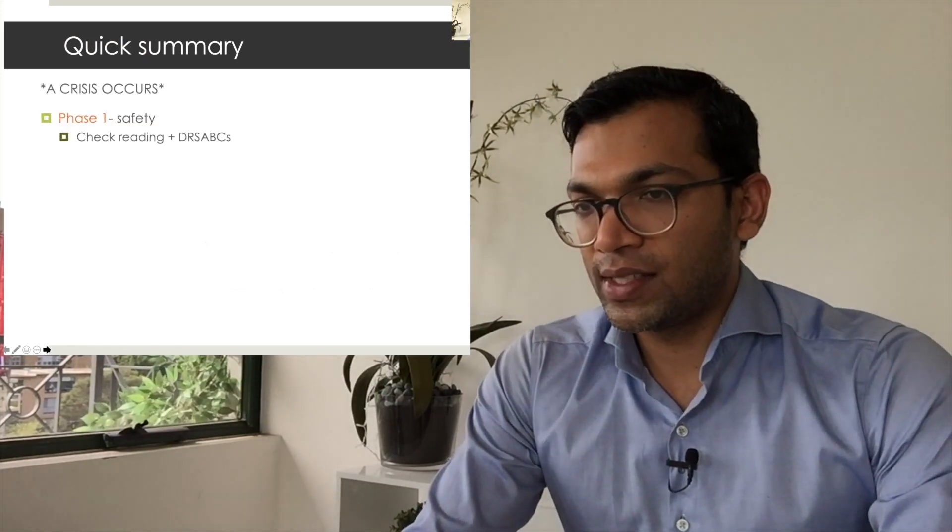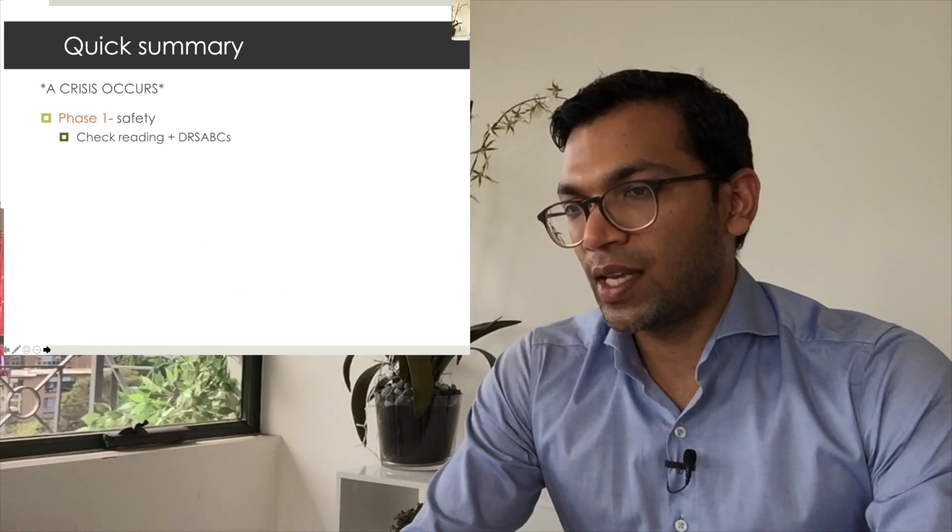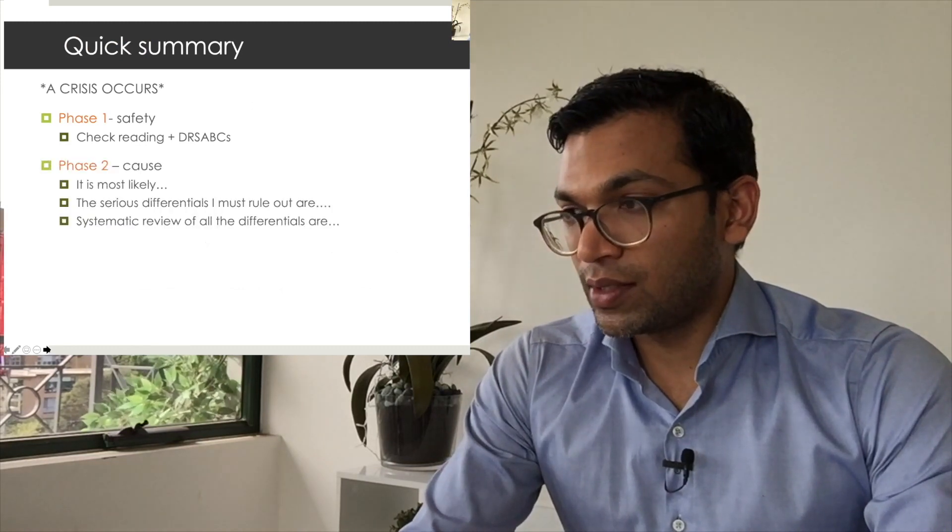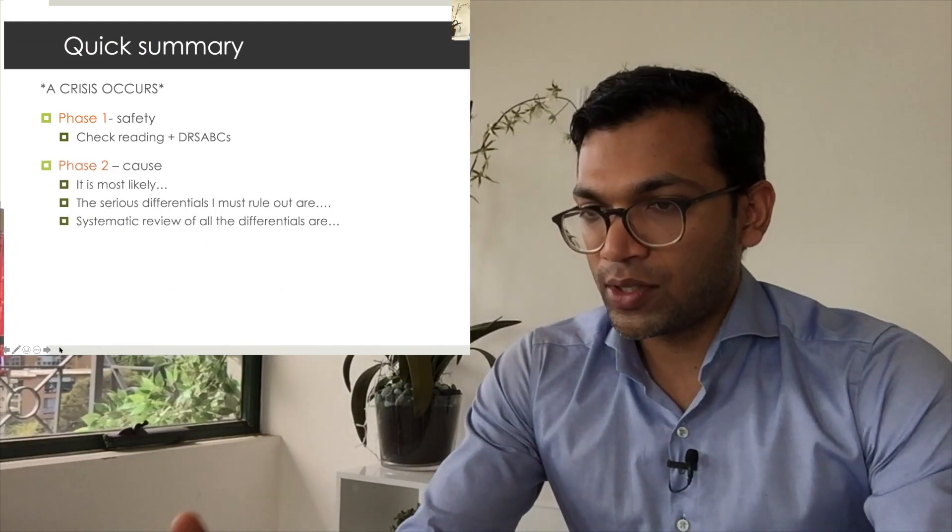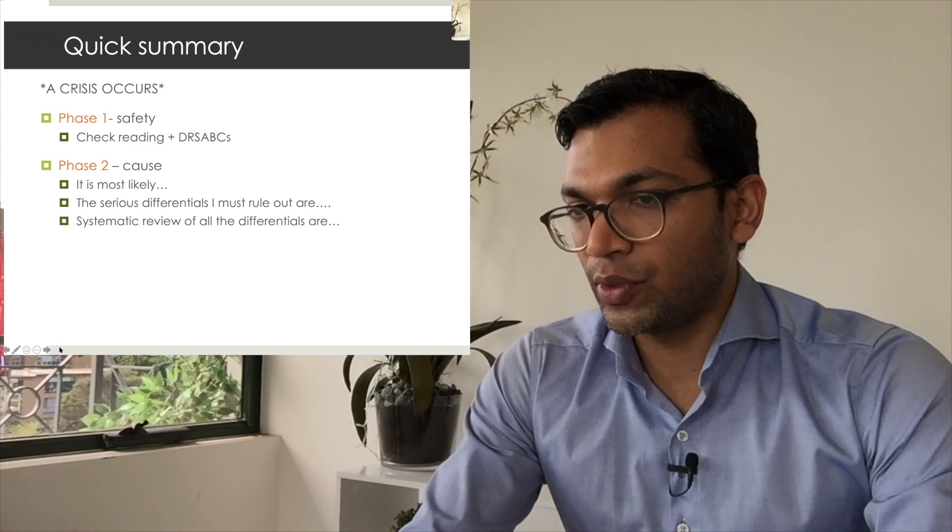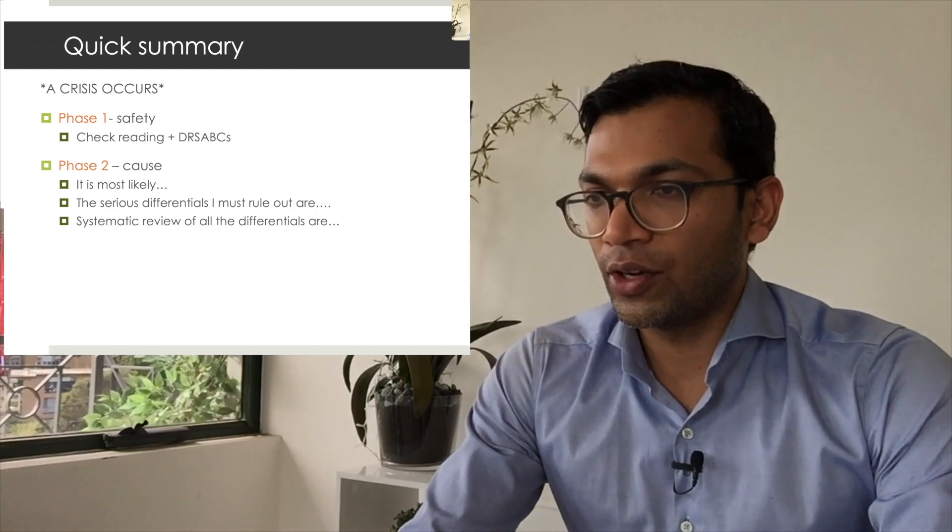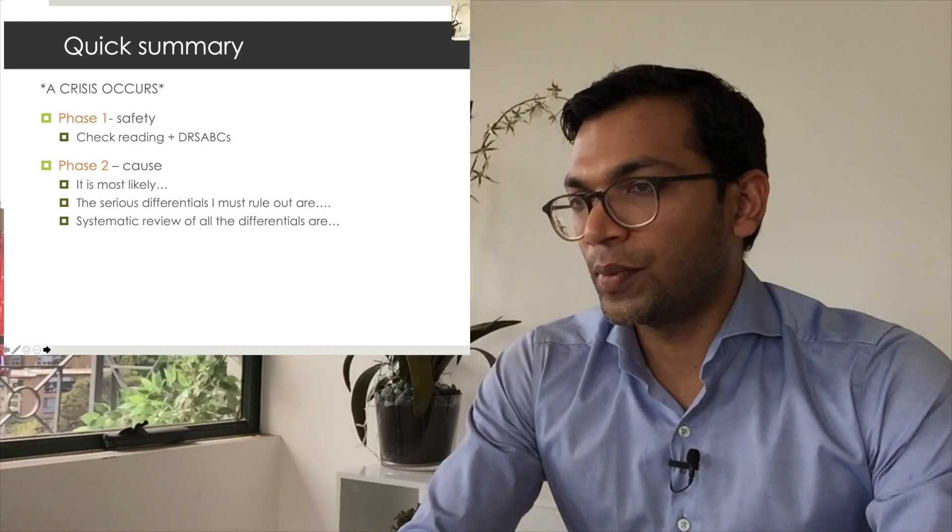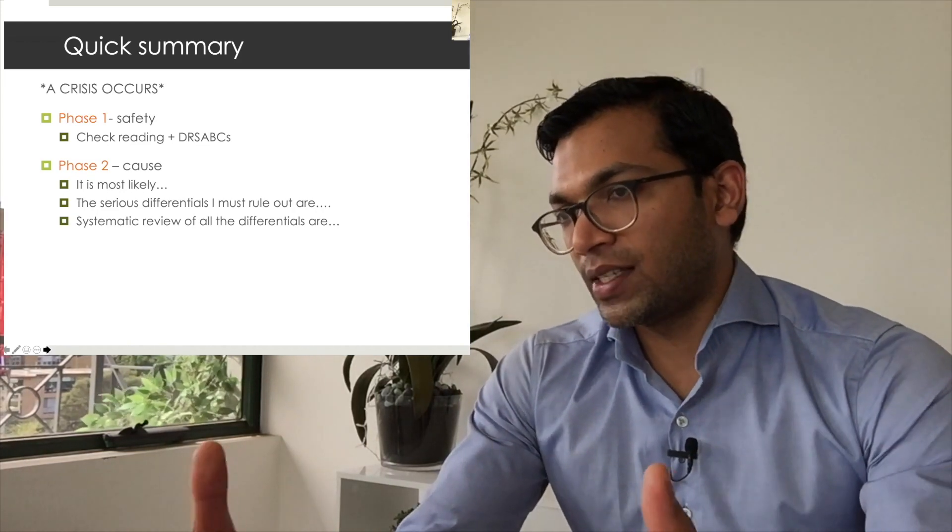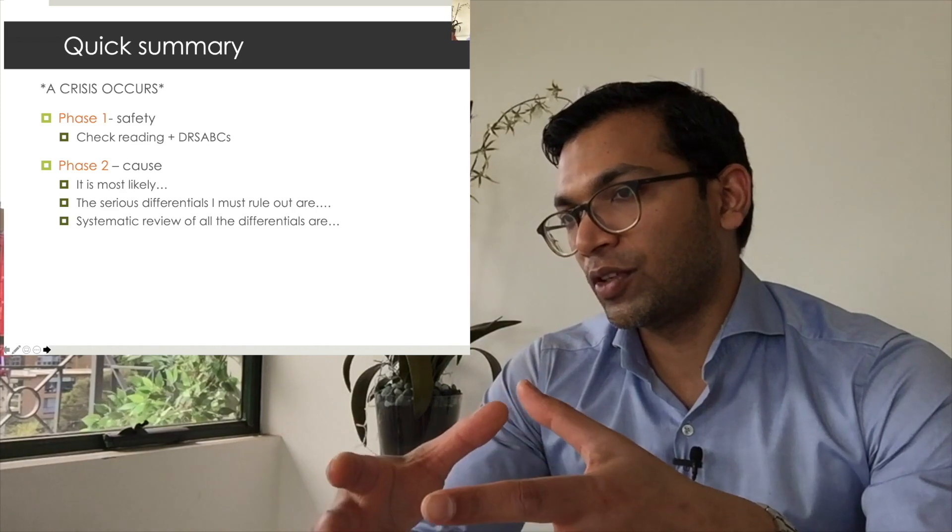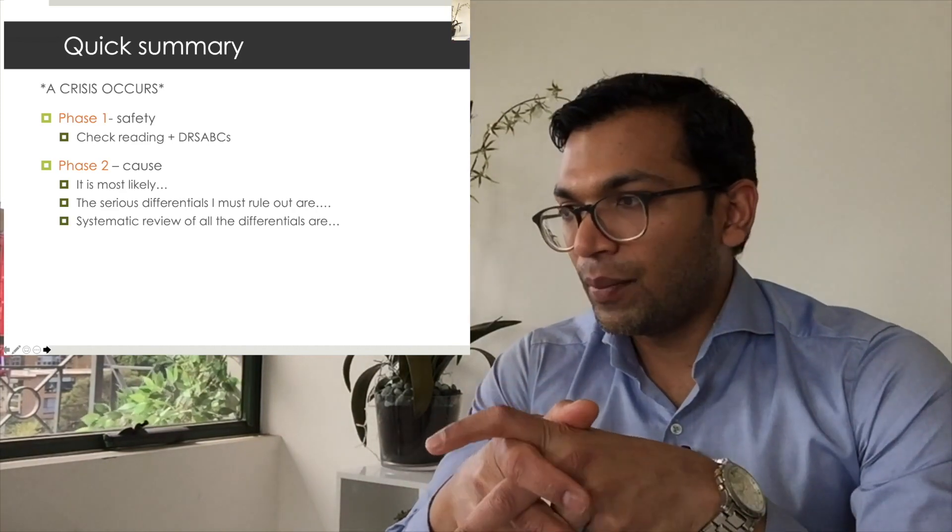Quick summary: crisis occurs. Your phase one is safety and optimization or temporization steps - you check your reading, check your ABCs. Your phase two is: it is most likely this, the serious differentials I must rule out are these. And if the examiner is unhappy or unsatisfied with those differentials, then I can go through my whole list of stuff. You'll note in your workbooks I've just got my tables that I've listed of all the different common problems that I'd see.